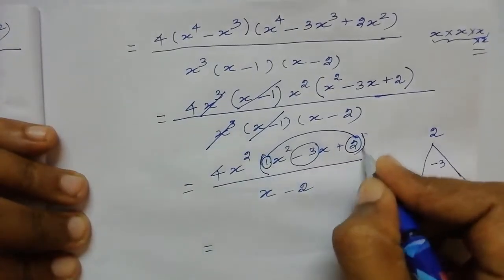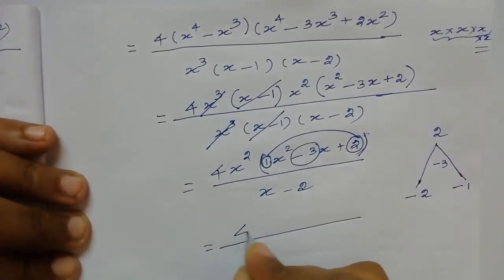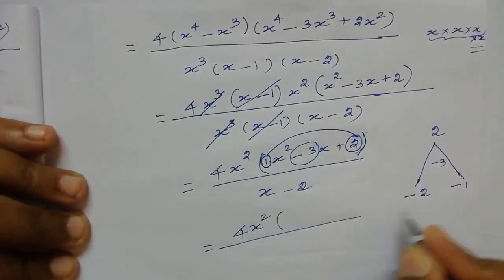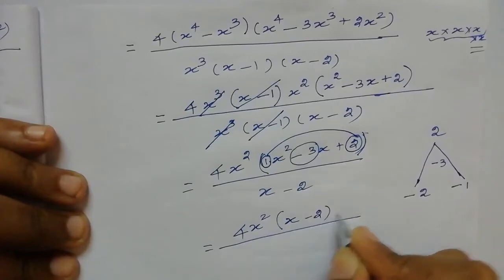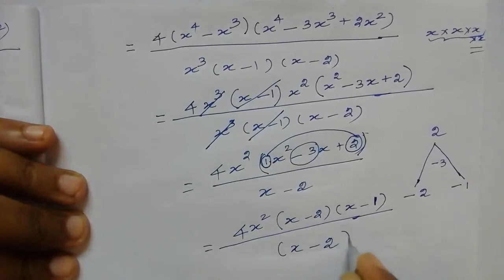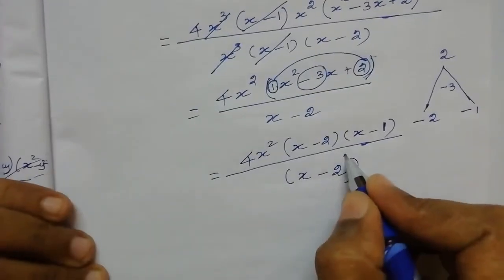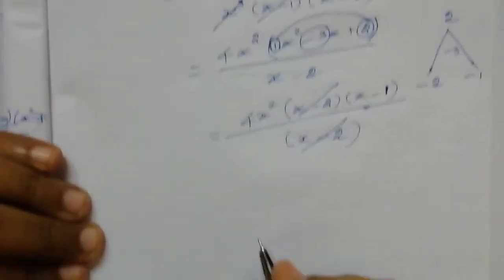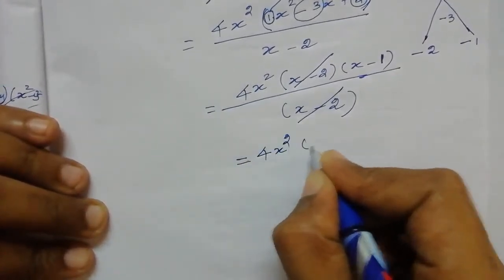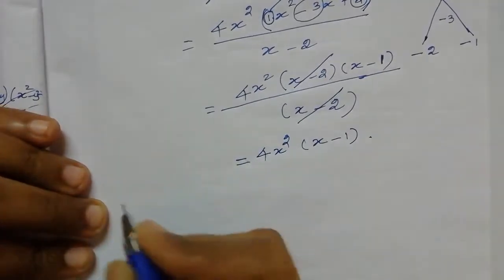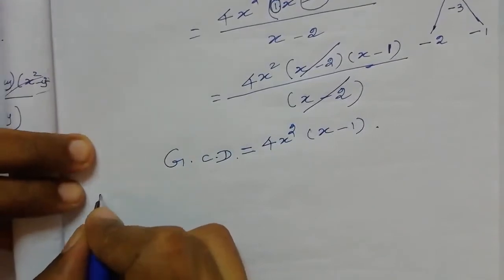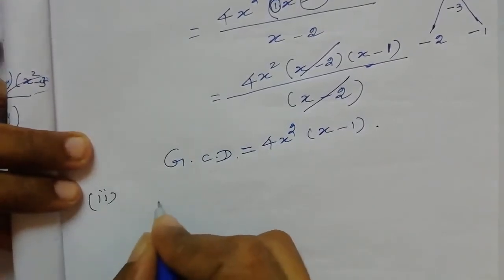So the numerator is 4x² × (x-2)(x-1) and the denominator is (x-2). We cancel the common factor (x-2) from numerator and denominator. The remaining terms are 4x² × (x-1). This is the required GCD for the first subdivision.